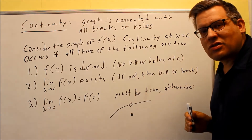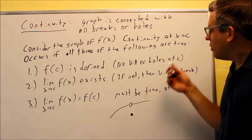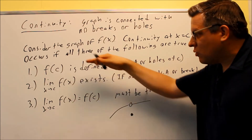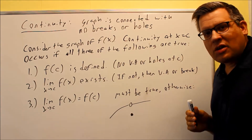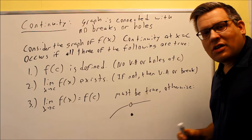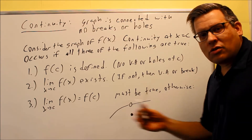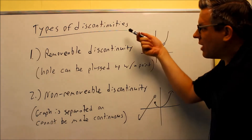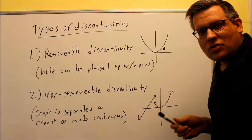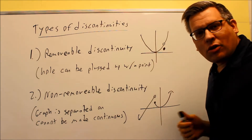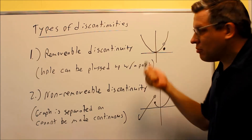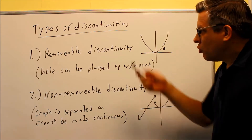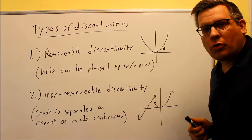All three of these must be satisfied in order to have continuity at x equals c. If any one of these is not true, it's considered discontinuous. Now there are a couple of different types of discontinuities — removable and non-removable.